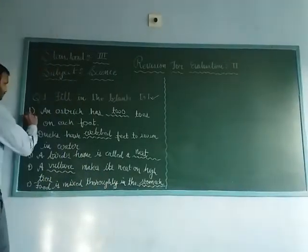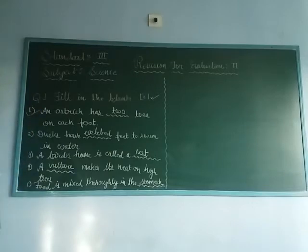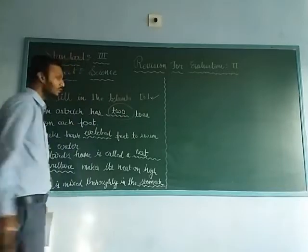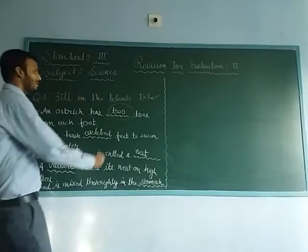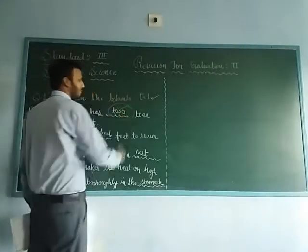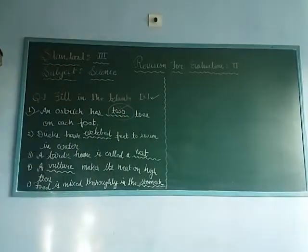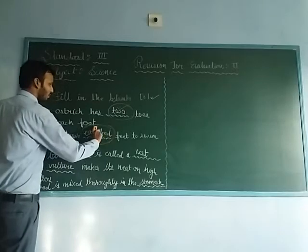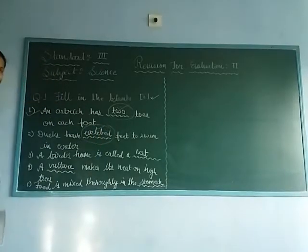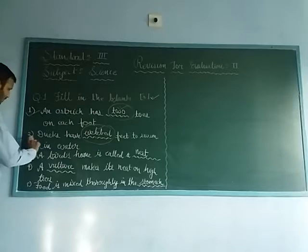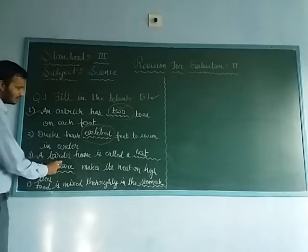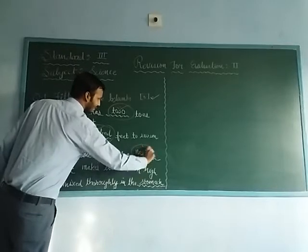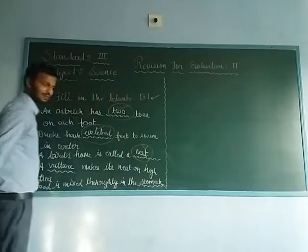Let's revise. First number: an ostrich has two toes on each foot, answer is two. Second number: ducks have webbed feet to swim in water. Third number: a bird's home is called a nest, answer is nest.